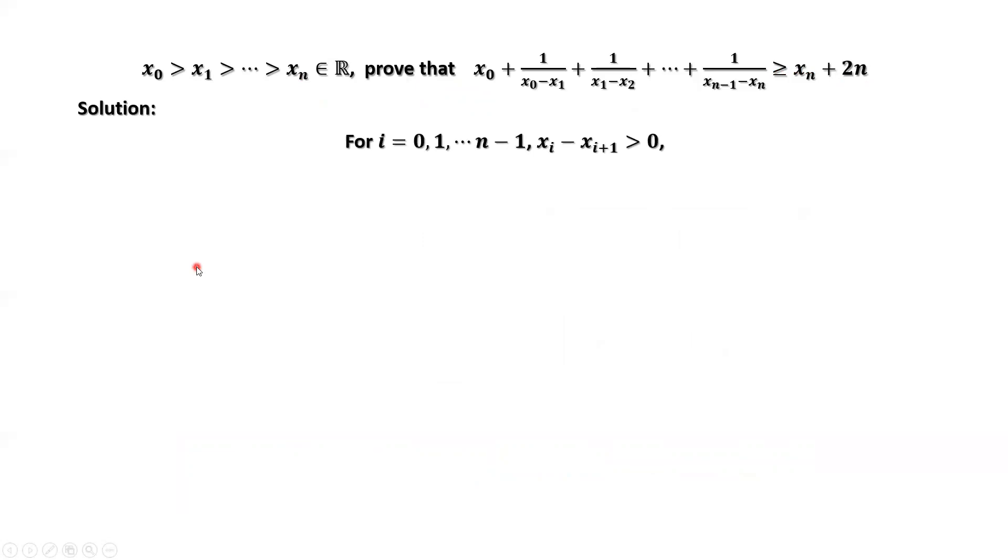Here is the important result we are going to use to solve this question. For any i from 0 to n minus 1, xi minus xi plus 1 is positive. From this given condition, we have this result. Therefore, we can use the geometric mean and arithmetic mean inequality.